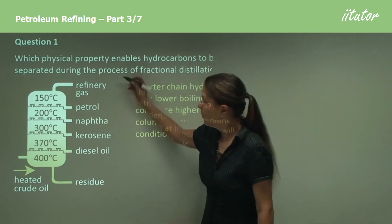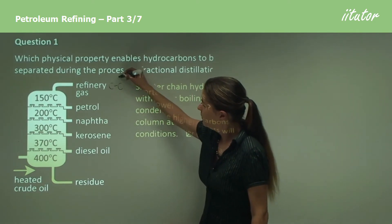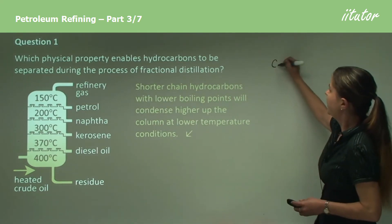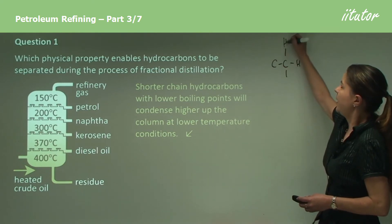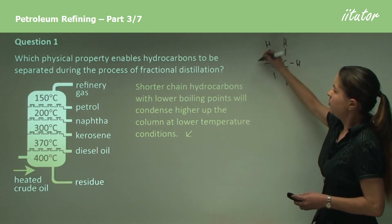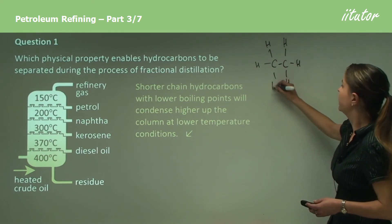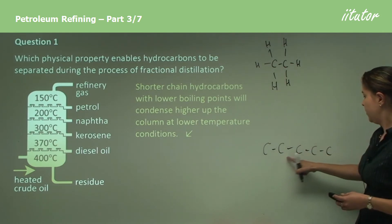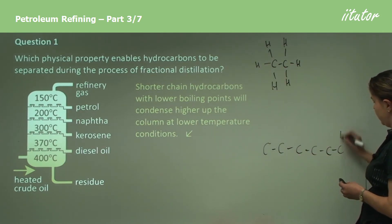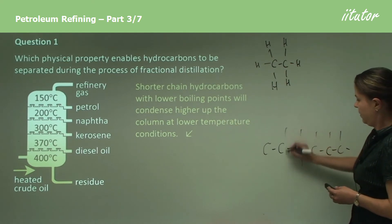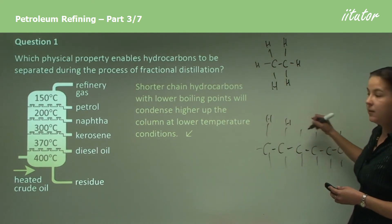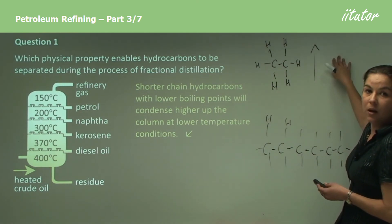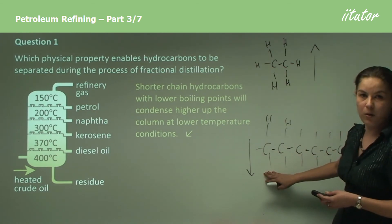Just to recap with an example: if we had ethane — C2H6 — on a very small scale column in a laboratory, and we also had hexane with six carbons, you could imagine that ethane would elute higher up the column, and hexane would elute lower down the column.